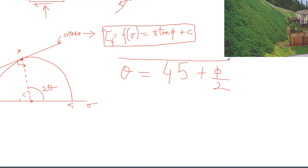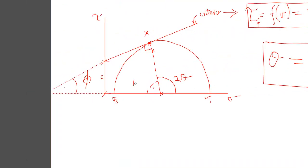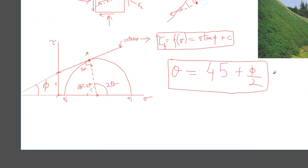This is simply just trigonometry. If you add up 180 degrees minus 2 theta and 90 degrees, and equate it to 180 degrees, this is what you'll come up with.